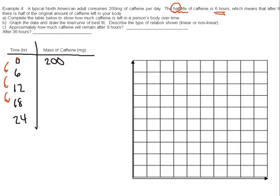And now, after six hours, there's only half left. So what's half of 200? 100. And another six hours, what's half of 100? 50. Half of 50, 25. Half of 25, 12.5. So again, every six hours, the amount of caffeine divides by two, or halves.